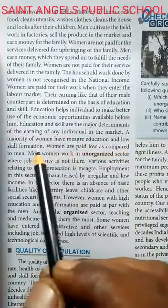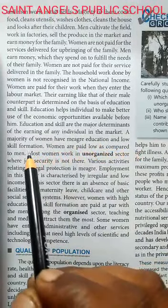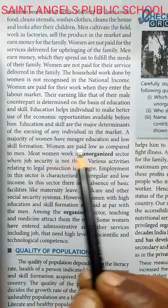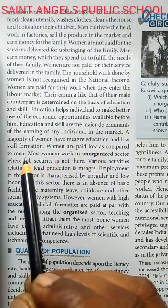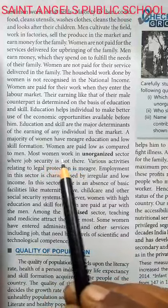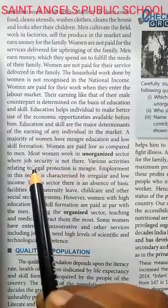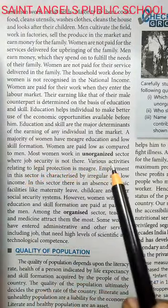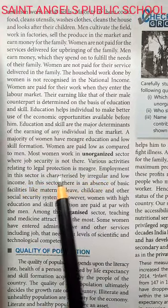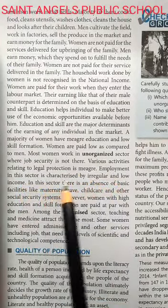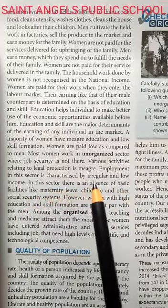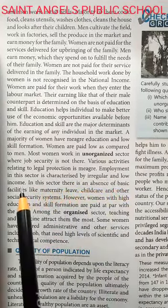Majority of women have mere education and low skill formation — जादातर औरतों के पास जो education और skill है वो बहुत ही कम है, यानि के औरतें बहुत कम पढ़ी-लिखी हैं। Women are paid low as compared to men — औरतों को आदमियों के मुकाबले कम पैसा दिया जाता है। Most women work in an unorganized sector where job security is not there — जहाँ पर job की security नहीं है। Employment in this sector is characterized by irregular and low income — यहाँ पर जो काम होता है वो irregular होता है और income भी बहुत कम होती है।